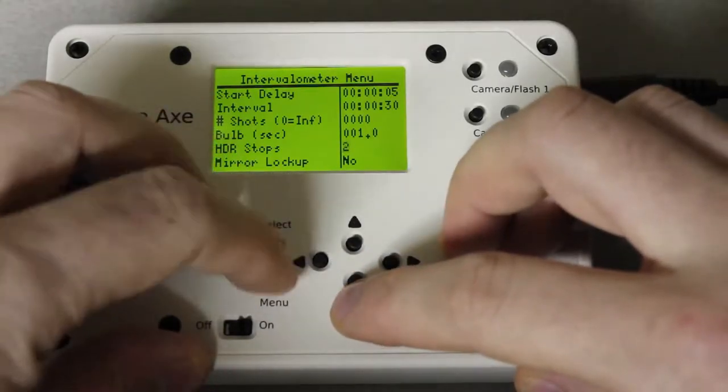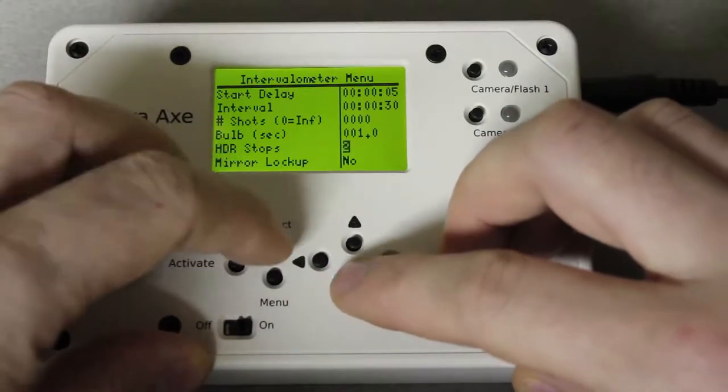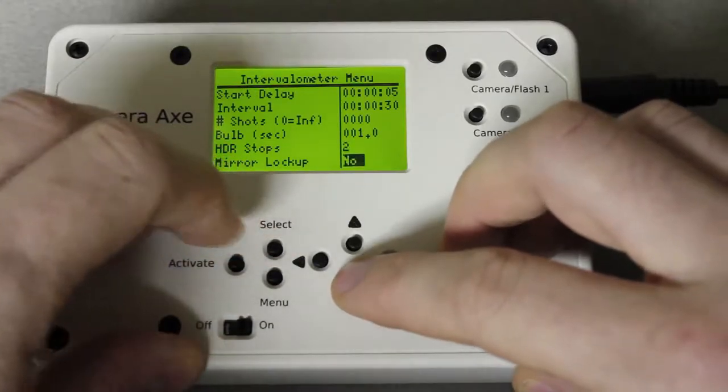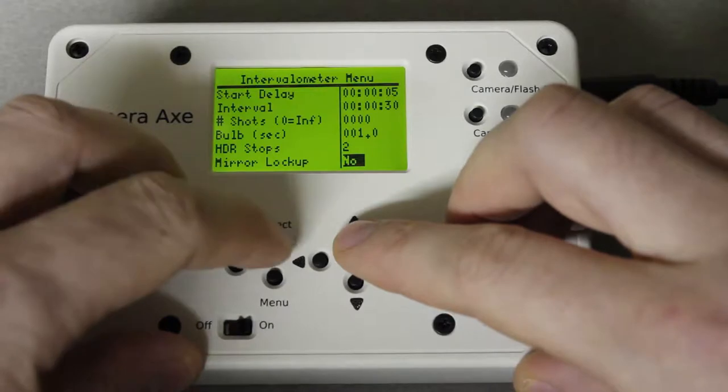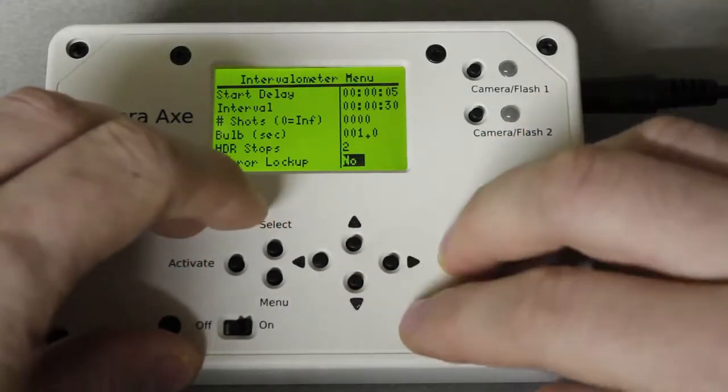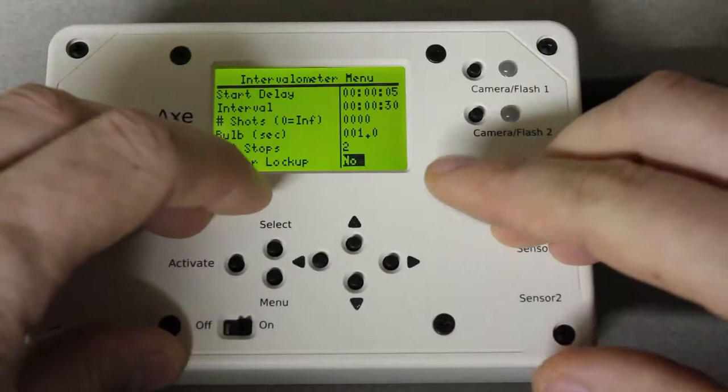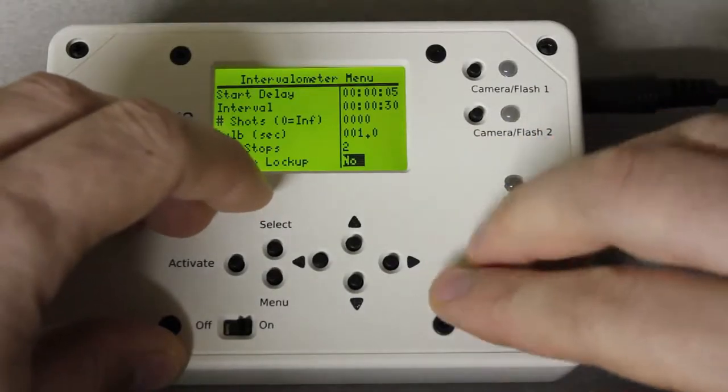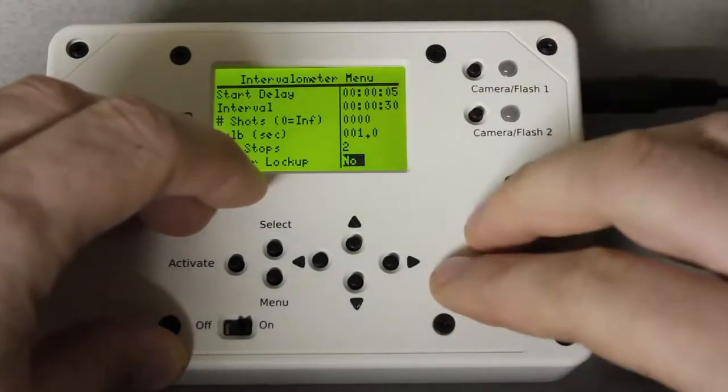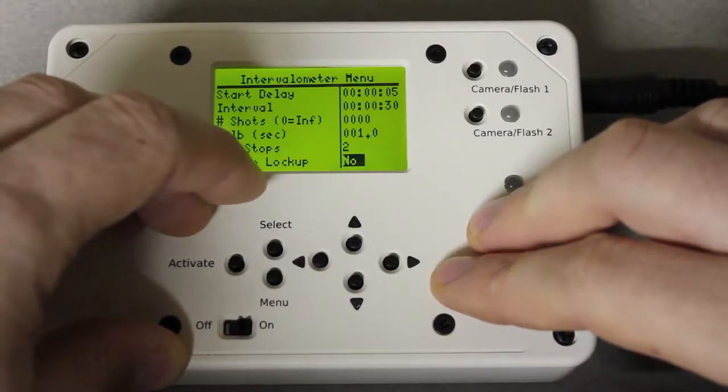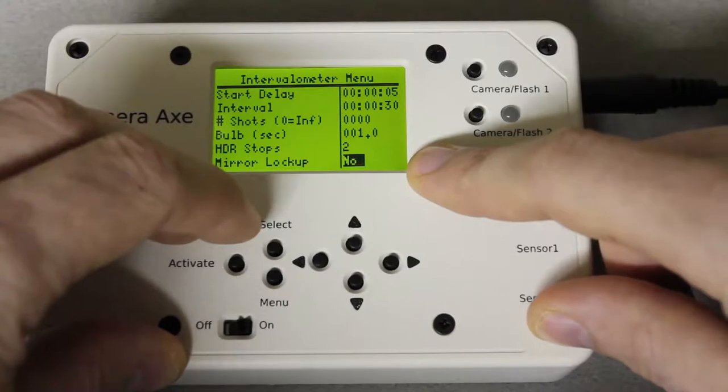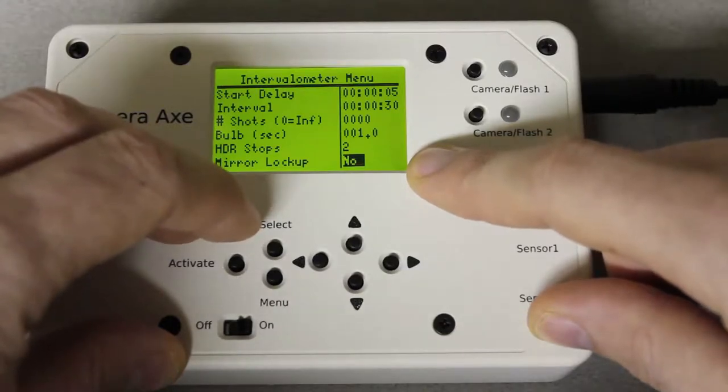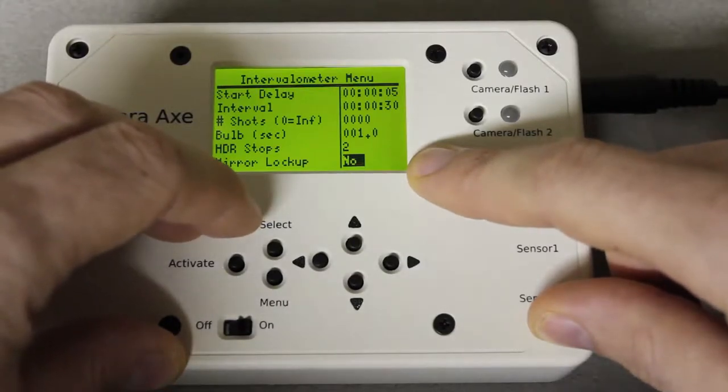So the next one is mirror lockup. The way this works is it will send a signal to your camera to flip up the mirror and then it will wait 2 seconds and take a photo. So you have to have your camera set into mirror lockup mode. And that's a control function on Canon cameras. I know there's something similar on Nikon and Olympus cameras.